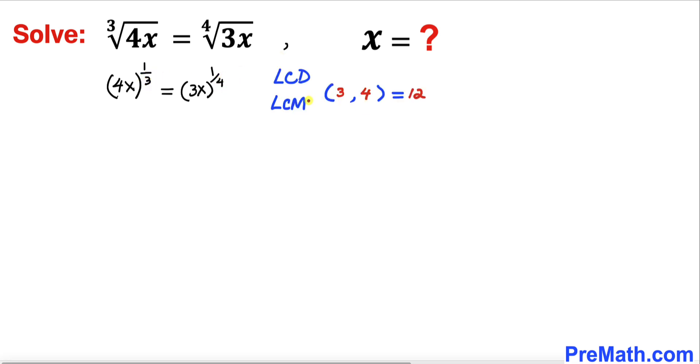So the least common denominator, or sometimes we call it least common multiple, of 3 and 4 is going to be 12. So let me go ahead and take power 12 on both sides of this equation. Power 12 on the left hand side and likewise power 12 on the right hand side as well.